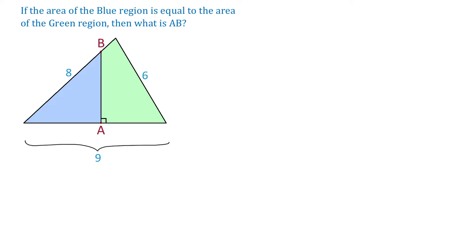In this figure we have a triangle with the sides of 6, 8, and 9 units. The line segment AB splits the entire triangle into two parts such that the area of the blue region is equal to the area of the green region. Then what is the length of the line segment AB?